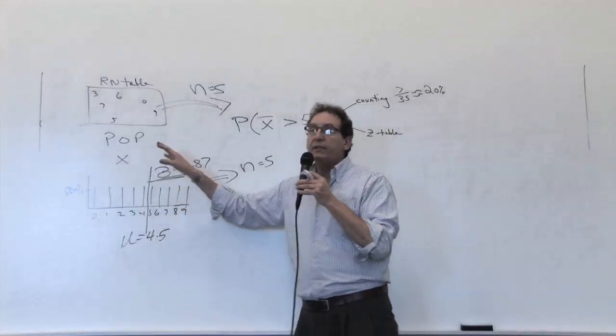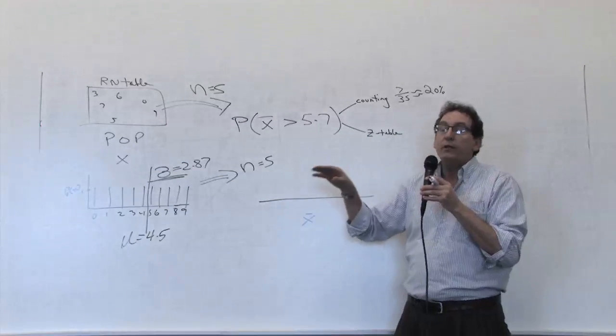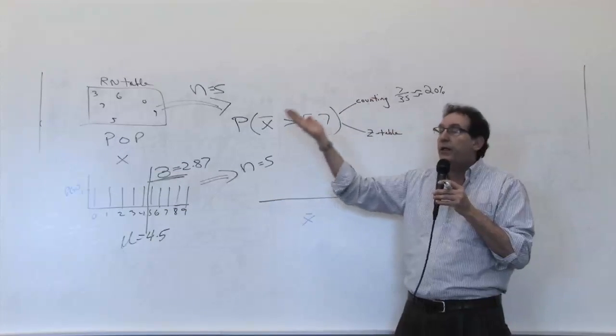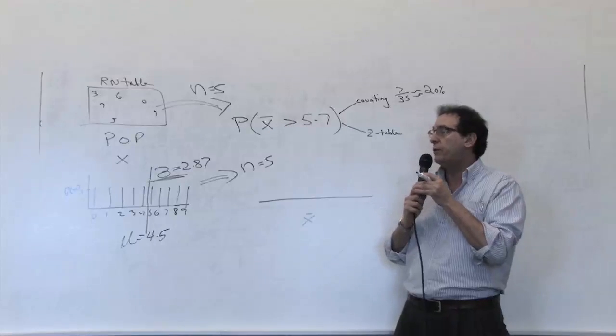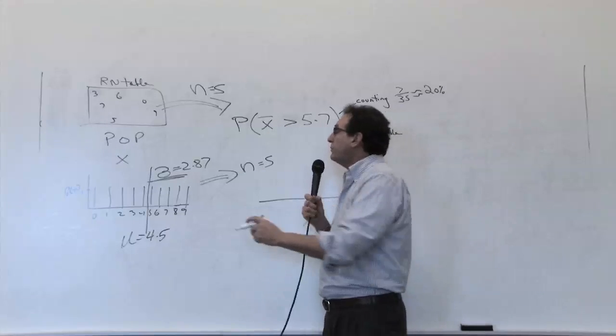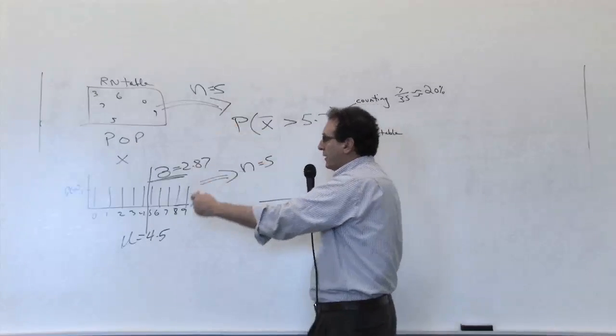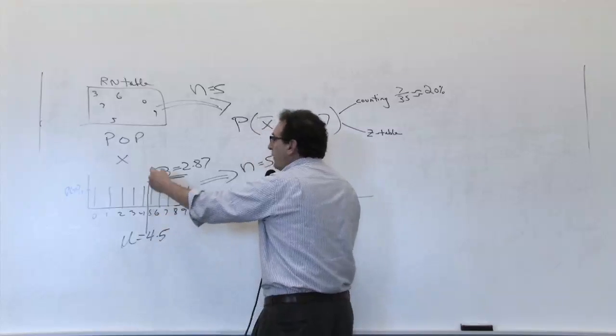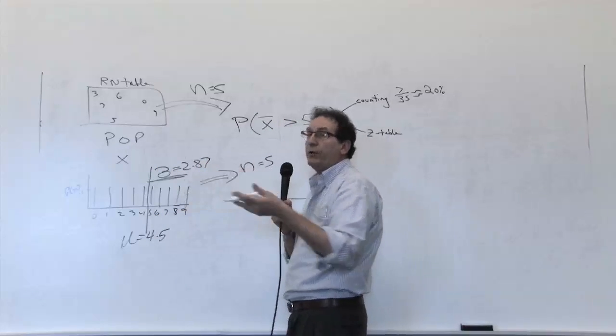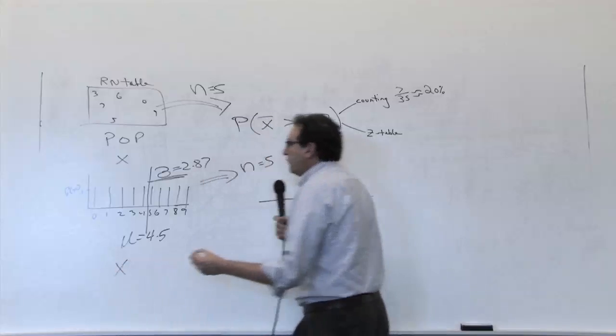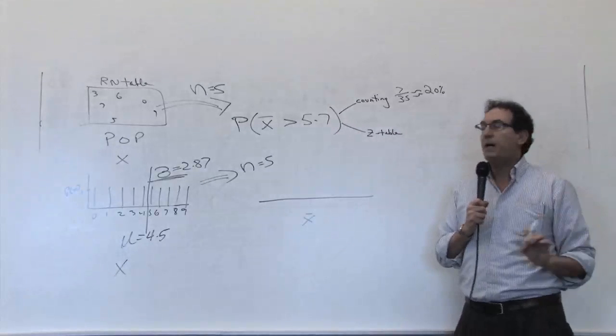What I'm trying to claim is every single example in Chapter 7 can be solved by making three pictures. Now, you don't have to make any pictures if you want to do it in your head. That's fine. But three pictures makes this whole thing very organized. The first picture tells you what do you know about the population. Well, we know the middle value is 4.5. We know the sigma is 2.87. You'll be told that in every specific example.